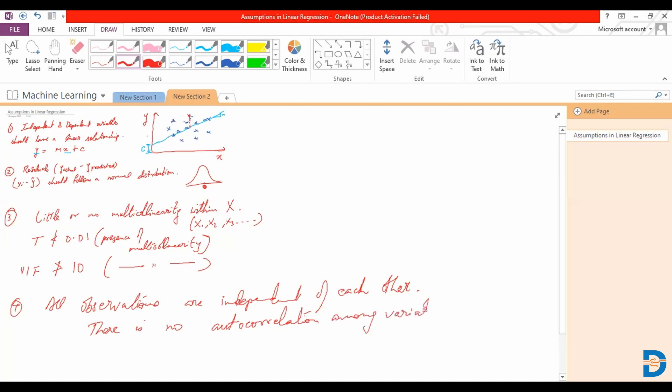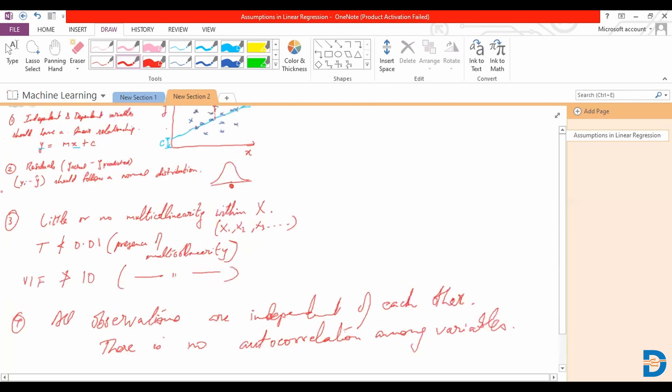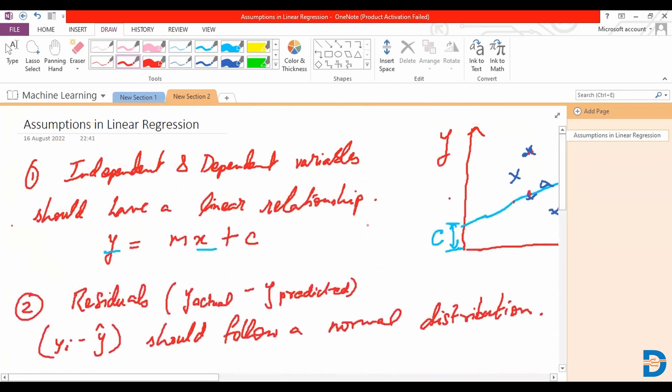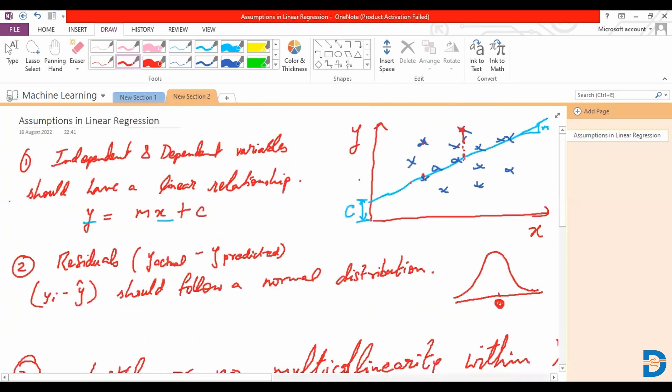So those are our key assumptions for linear regression: lack of multicollinearity, lack of autocorrelation, the residuals following a normal distribution, and there being a linear relationship between our independent and dependent variables.